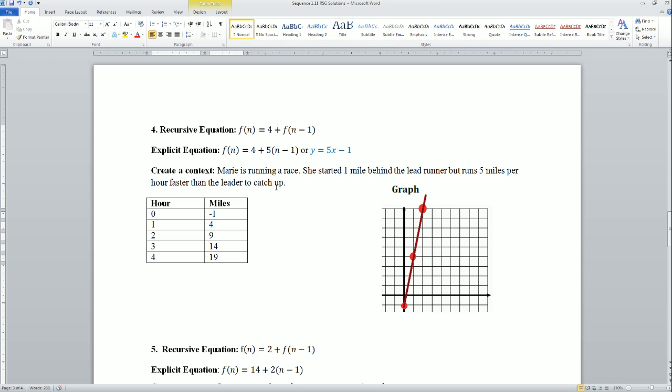Here is my scenario: Mary's running a race. She starts one mile behind because that is the minus one—the lead runner—but runs at five miles per hour faster to catch up. Do you see how she's one mile behind the leader? At one hour, she's already four miles ahead, then she's nine miles ahead at two hours. Here's the graph visually.